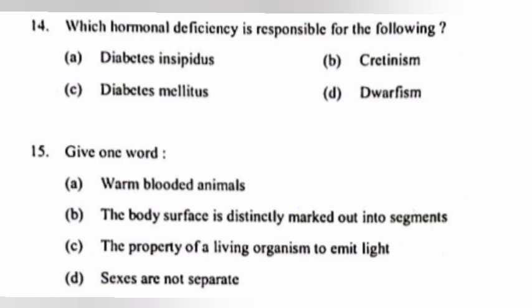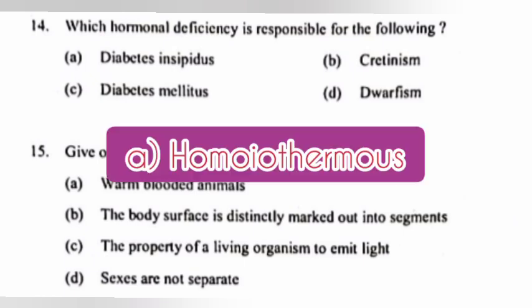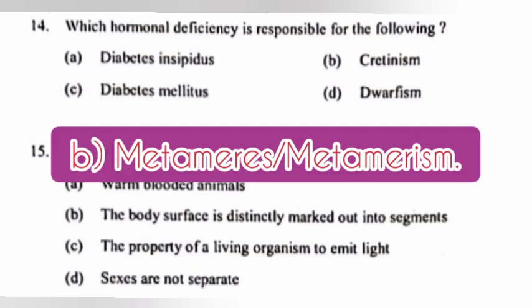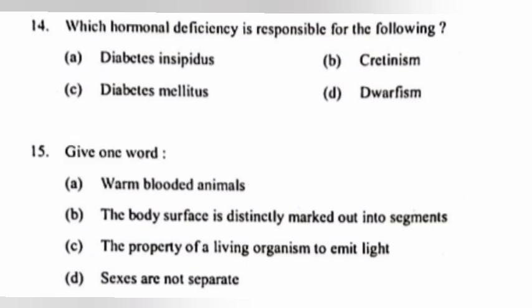Question 15. Give one word. A. Warm-blooded animals. Answer: Homeothermous. B. The body surface is distinctly marked out into segments. Answer: Metamerism.